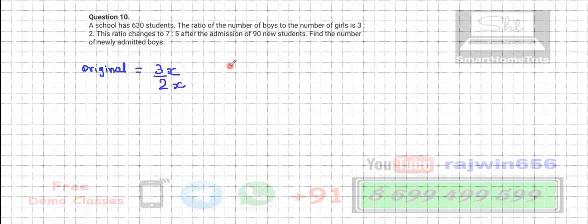So 3x plus 2x is equal to the original number of students, which is 630. So 5x is equal to 630. x will be equal to 630 divided by 5, which is 126.